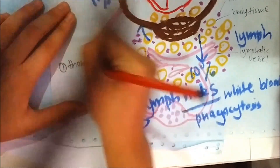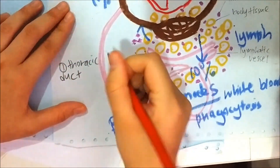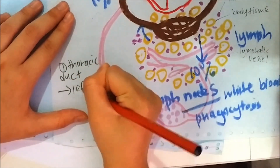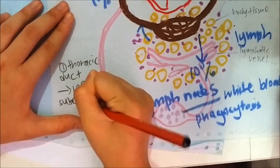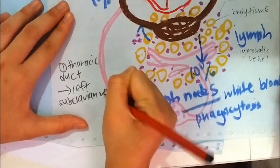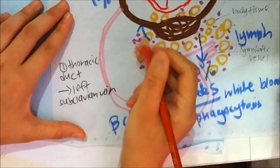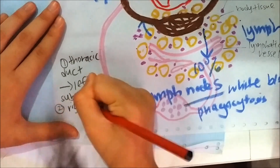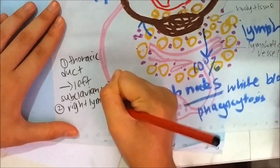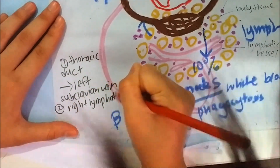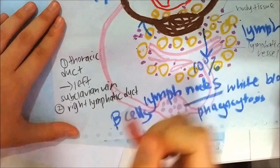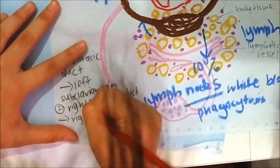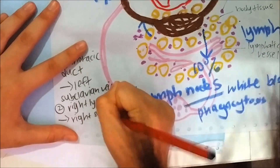The lymph flows in two directions. The first direction is the thoracic duct — lymph from the thoracic duct flows into the left subclavian vein. The second direction is the right lymphatic duct — lymph from the right lymphatic duct flows into the right subclavian vein.